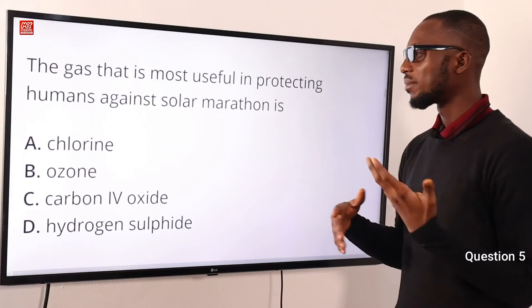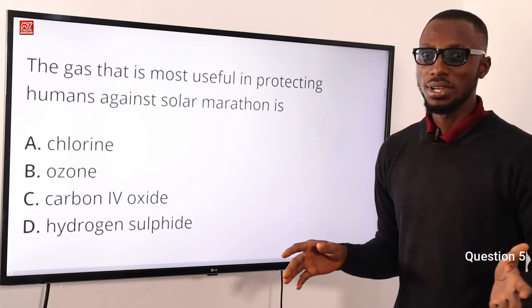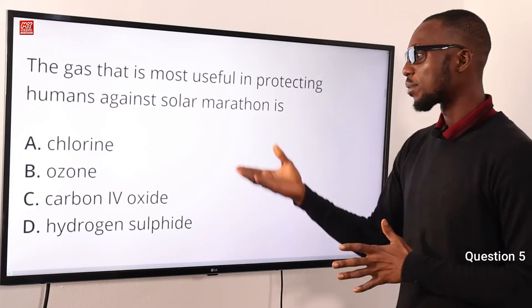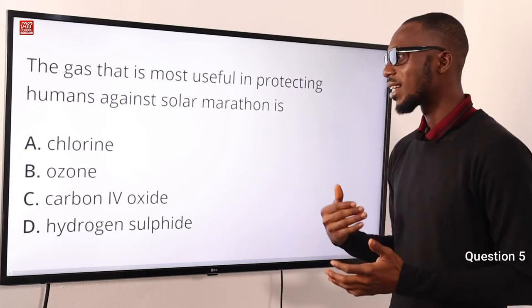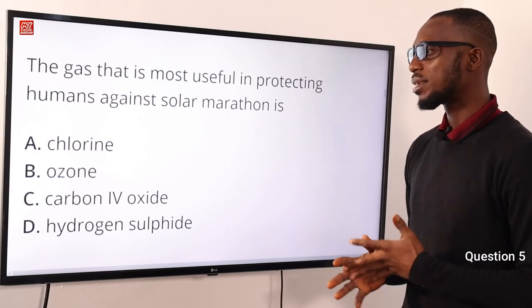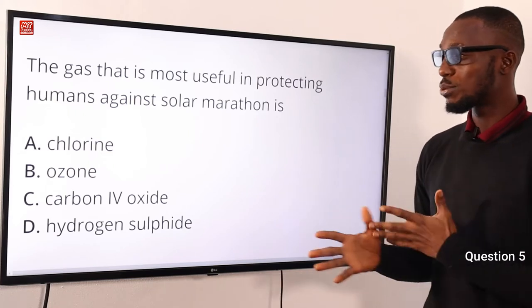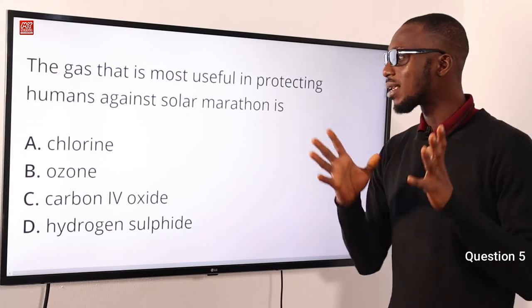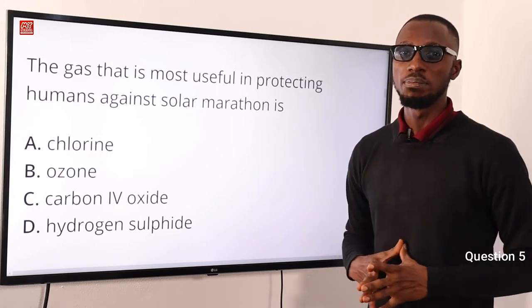Ozone absorbs about 99% of solar UV radiation. Once it has been depleted or destroyed, we will have excess exposure to solar radiation, which can lead to eye cataracts, skin cancer, and reduction in crop yield. The gas is ozone O3, and the correct answer is option B.